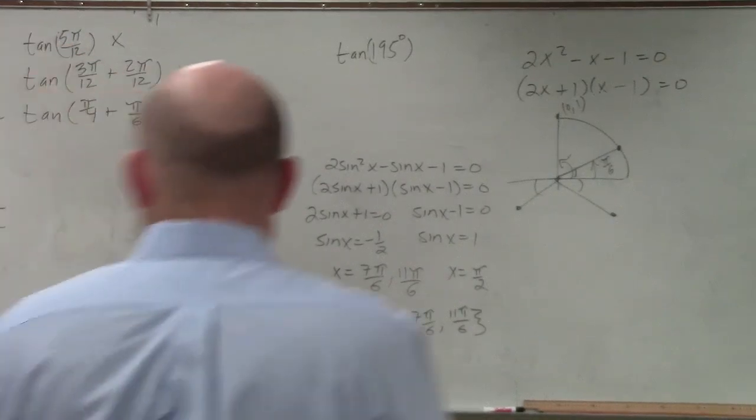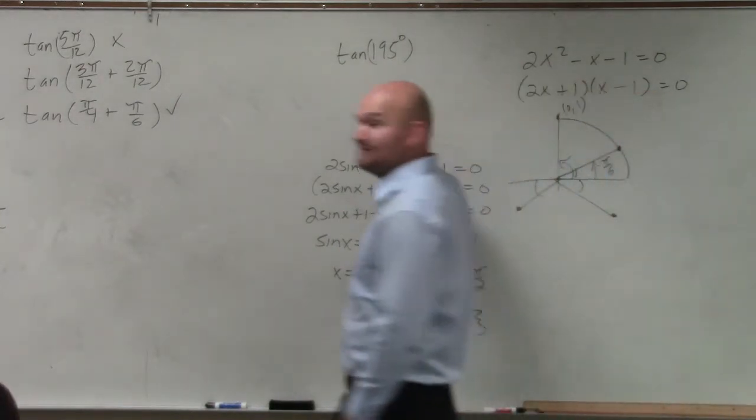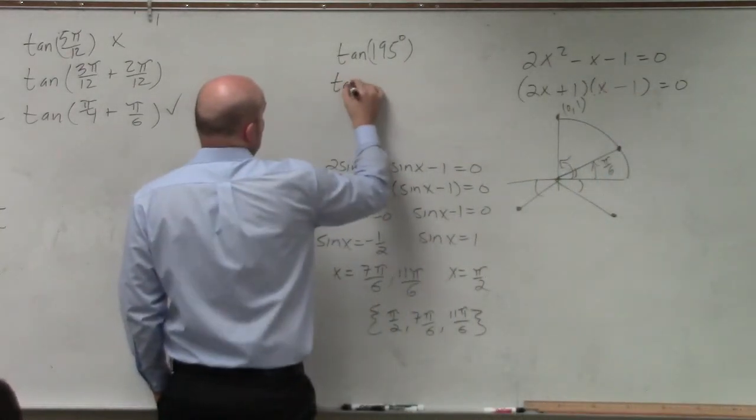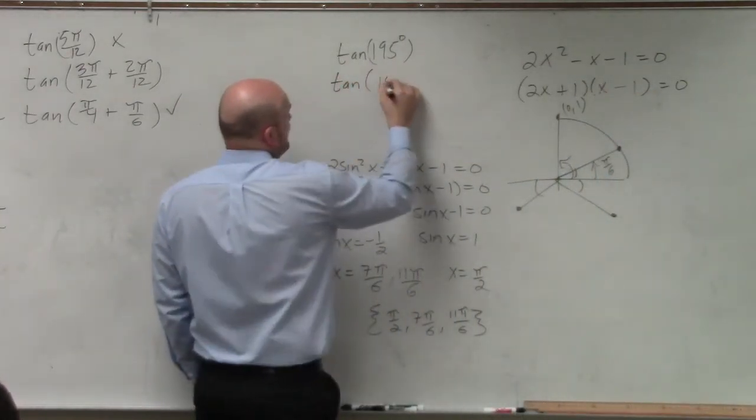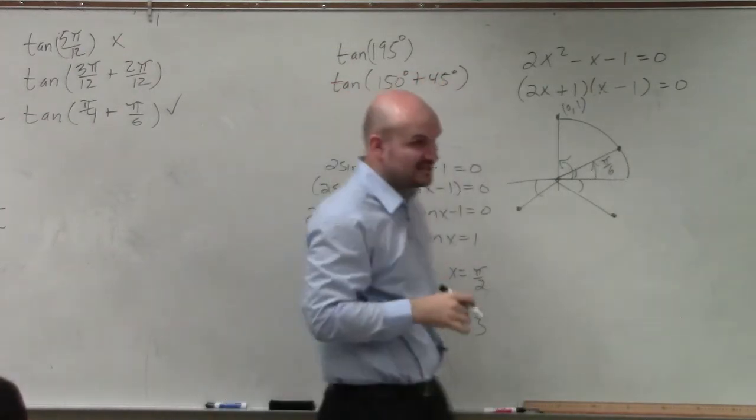We'll use the half angle formula. Could we not have done our other formula? Would you agree that 150 degrees plus 45 degrees is the same thing as tangent of 195?